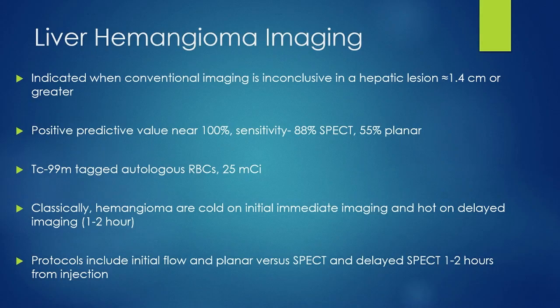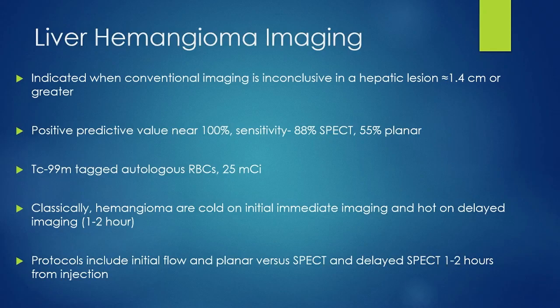Shifting to liver hemangioma imaging. Since we're using Tc-99M labeled red blood cells, this fits within the GI section. This is indicated when conventional imaging is inconclusive and there is a hepatic lesion at least 1.4 centimeters — you need SPECT CT to get to this lower detection limit — and there's a question of whether it's a hemangioma. If the study is positive, the positive predictive value is near 100%. Sensitivity with SPECT is 88%; with planar-only imaging it's only 55%, so we do not want planar-only protocols.